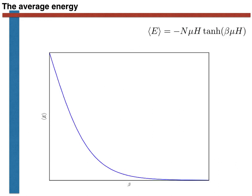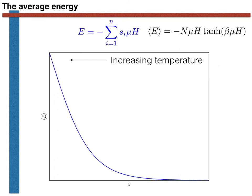It is worth dwelling on what this expression tells us about how the spins behave as the temperature is changed. In the graph shown here, the blue line shows the dependence of the average energy on beta. Remember, beta is equal to 1/kT, so moving leftwards on this figure corresponds to increasing the temperature. When beta is large — that is, when the temperature is small — the average energy saturates at a value of minus N mu h. From this, we can deduce that all the spins must be aligned with the magnetic field, as shown here, since the energy is minimised when all spins point in the same direction as the field.